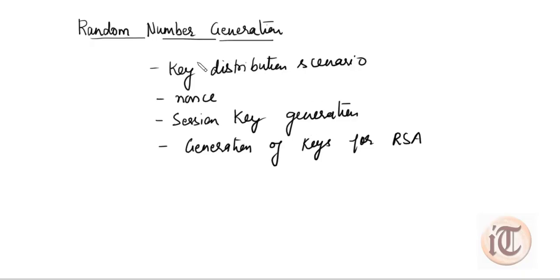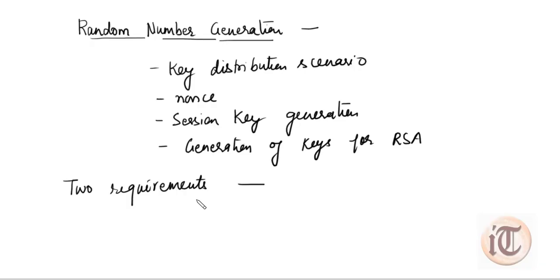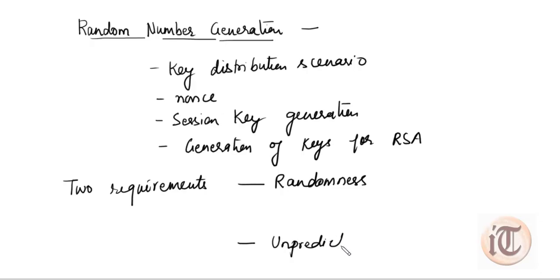A random number can be defined as any mathematical number that fulfills two main requirements. The first requirement is randomness, and the second is unpredictability. If these two requirements are fulfilled by any mathematical number, then that number is called a random number.